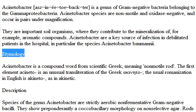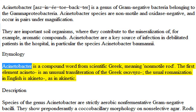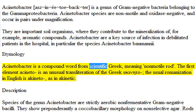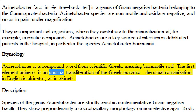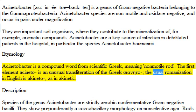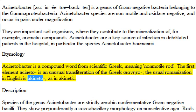Etymology: Acinetobacter is a compound word from scientific Greek, meaning non-motile rod. The first element, Acinetou, is an unusual transliteration of the Greek; the usual romanization in English is Akineto, as in akinetic.